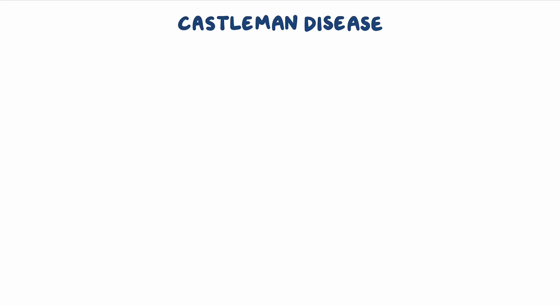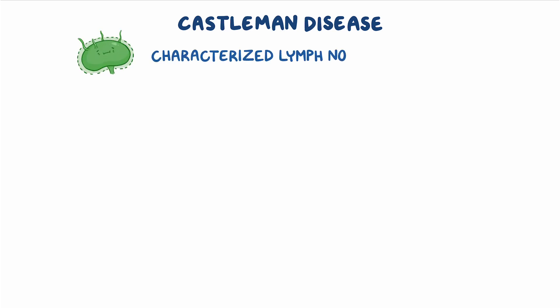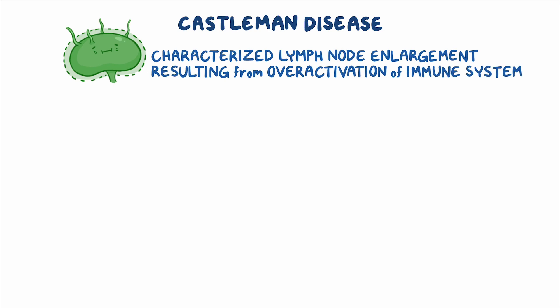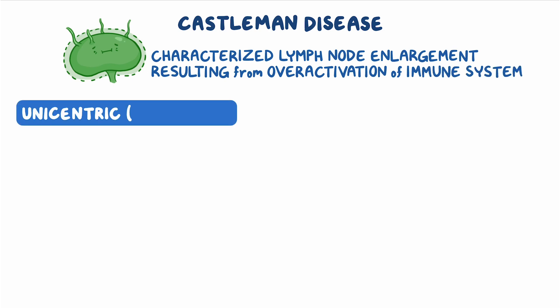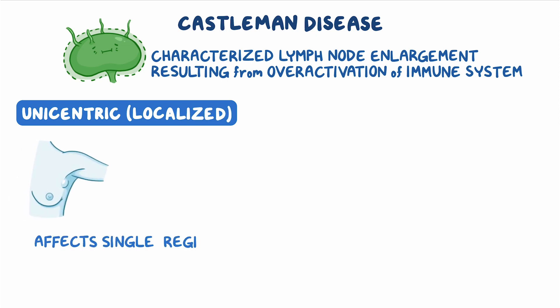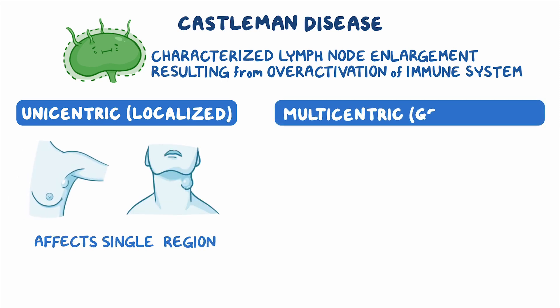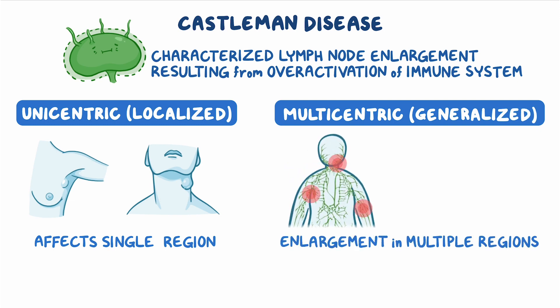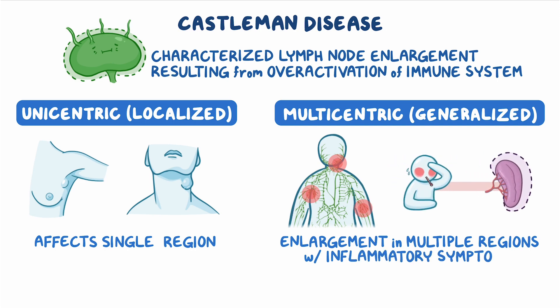Castleman disease describes a group of immune-related disorders characterized by lymph node enlargement resulting from the over-activation of the immune system. There are two main types of Castleman disease: unicentric, or localized, which only affects a single lymph node region, and multicentric, or generalized, where there is lymph node enlargement in multiple regions of the body, along with a broad range of inflammatory symptoms.